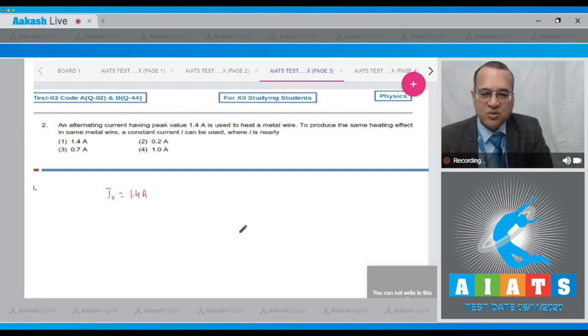Now, by the definition of RMS value, whenever you have to go for heating, then its effective value is called RMS value or the virtual value. That becomes equal to 1.4 divided by root 2. So that is equal to 1.4 multiplied by 0.707, which is 1 ampere. That means the effective value of 1.4 ampere AC is equivalent to 1 ampere constant current. The fourth option is 1 ampere, therefore the answer to this question is option number 4.